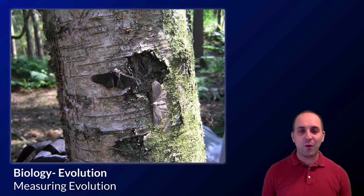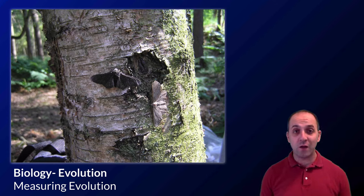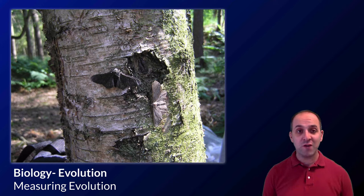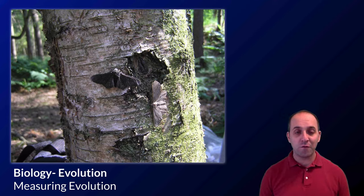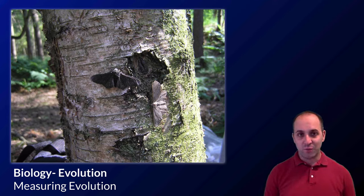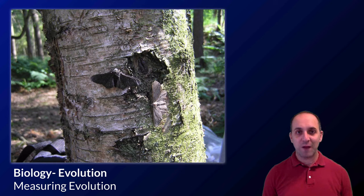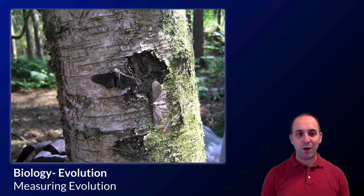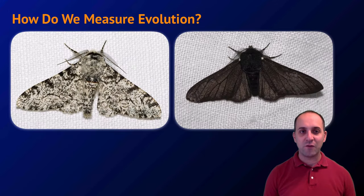Looking at the changes in the coloration of the moths, there are two different colors: a light color and a dark color. It turns out that the frequency of the different colors changed as the coloration of the trees on which they live changed, which is pretty much exactly what you would expect if natural selection was actually happening.